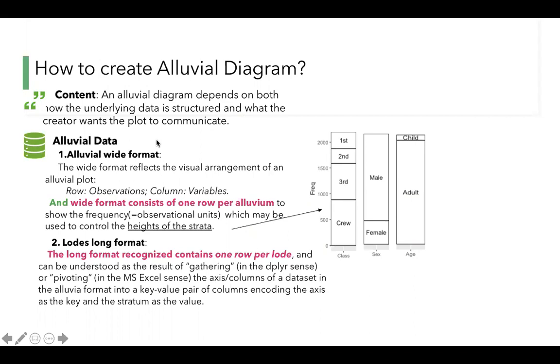An alluvial plot has two types of data: alluvial wide format and lodes long format. Wide format consists of one row per alluvium to show its frequency equal to observational units, which may be used to control the height of the strata.